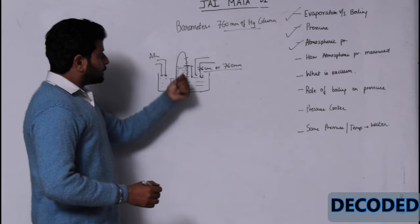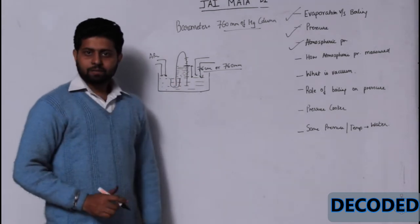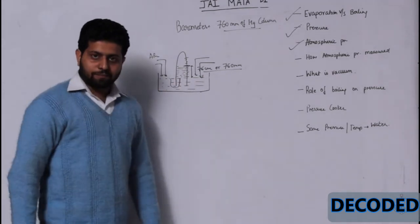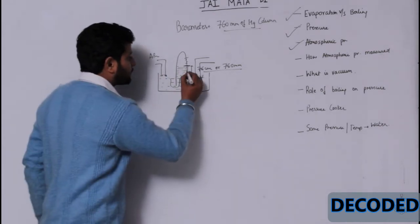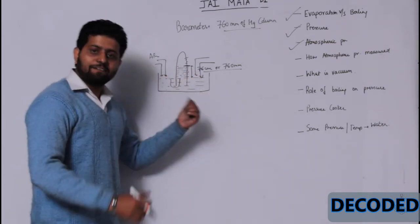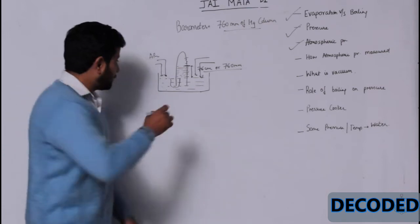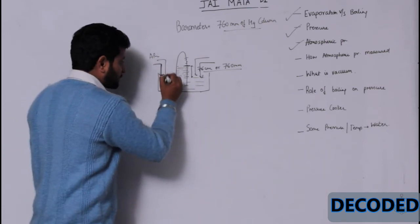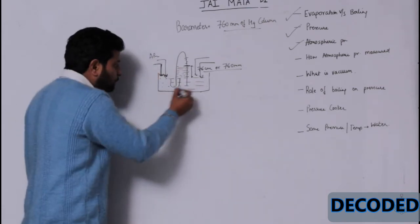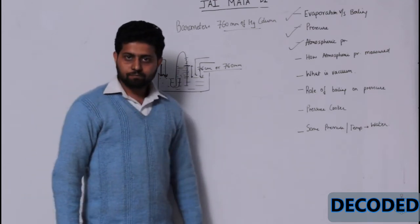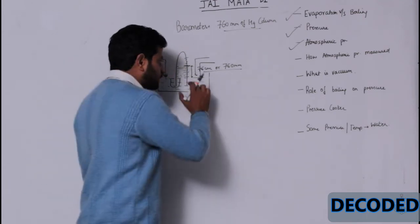So this height is approximately 76 centimeter or 760 mm. That is why we show atmospheric pressure is 760 mm. If we take it on Mount Everest, it will not be 760 mm, it might be 600 mm or 500 mm because atmospheric pressure has reduced, so it will not push mercury over here. Now second question is, why are we taking mercury?